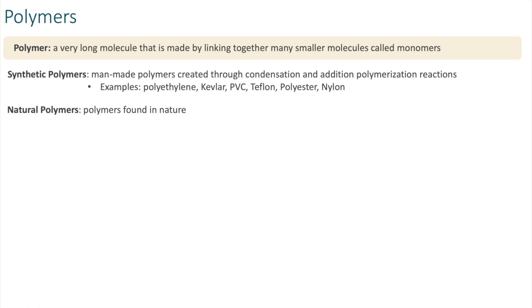Natural polymers are just found in nature. Examples of polymers are DNA, carbohydrates, starches, proteins, natural rubber, as well as glucose.